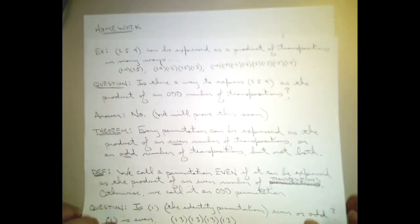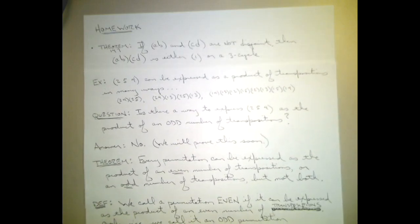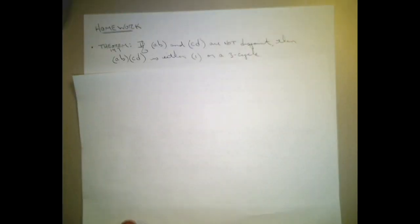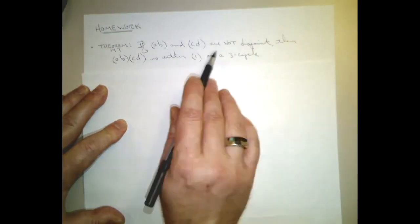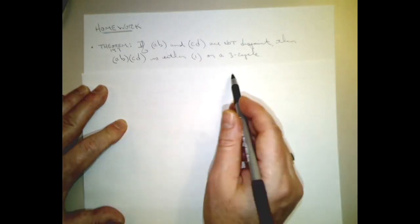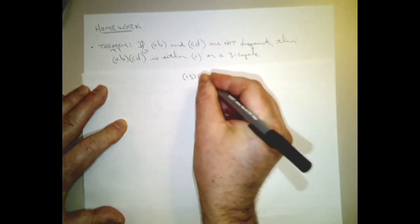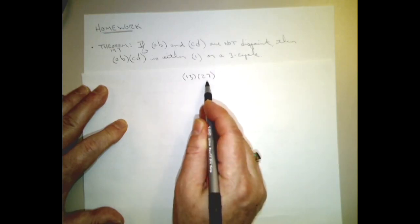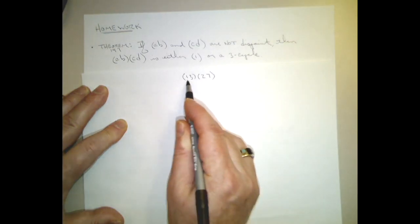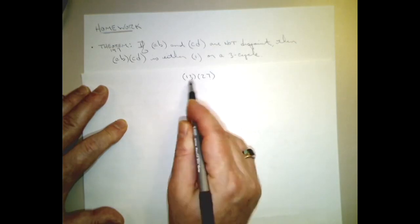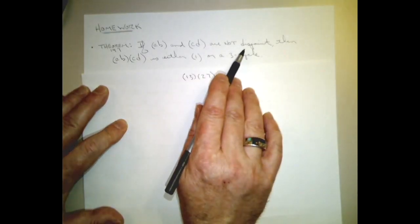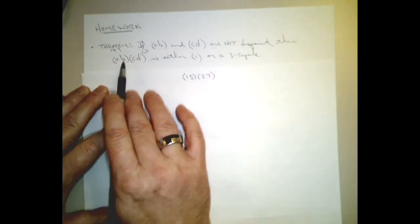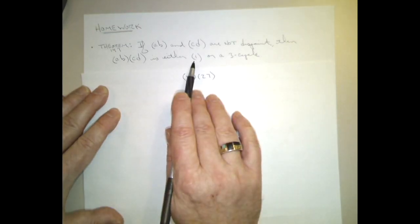So with all that in mind, I've got some homework for you from my notes. Theorem 147 says that if (a, b) and (c, d) are not disjoint - remember, disjoint means they don't have anything in common; for example (1, 3) and (2, 7) are disjoint because they share no elements - then the product of those two non-disjoint transpositions is either going to be the identity or a 3-cycle. I want you to prove that.